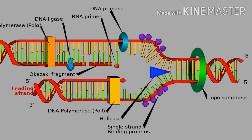Then DNA polymerase 3 — it is the main builder enzyme, or we can say the main enzyme for the DNA replication process, and it only synthesizes DNA in the 5 prime to 3 prime direction. Then Tus proteins, which are the product of the tus gene, are responsible for DNA replication termination in prokaryotes.